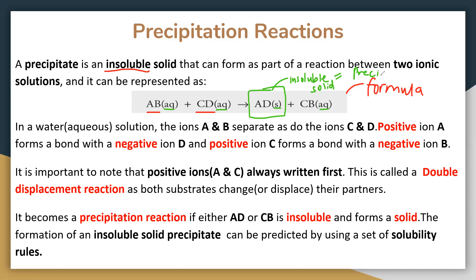If we ever ask you to identify the precipitate, you're looking at what forms when two solutions are mixed together — what forms in the test tube or beaker that doesn't dissolve, that doesn't lead to a clear solution, but is cloudy or like a jelly-like substance. The precipitate is the only insoluble substance; it takes on a solid state of matter and stays behind in the test tube or beaker as a solid.